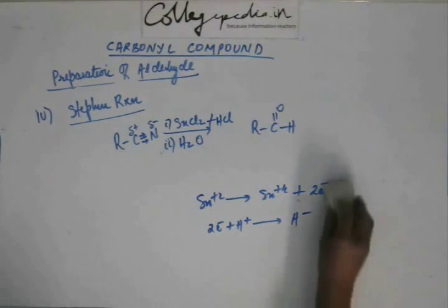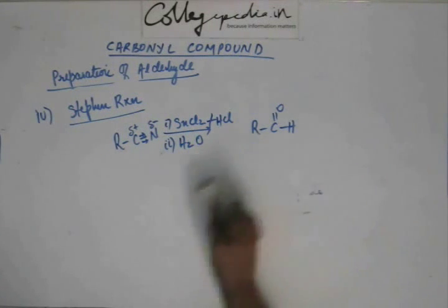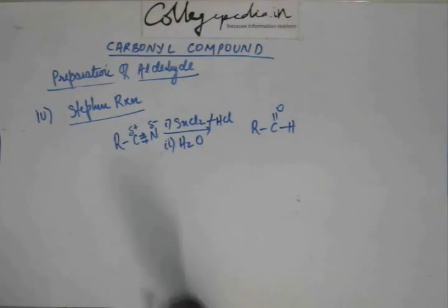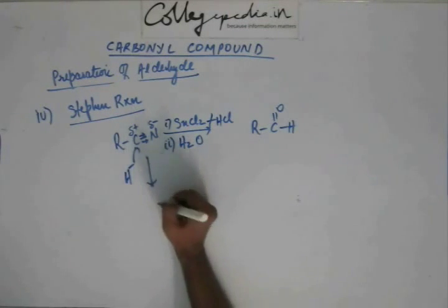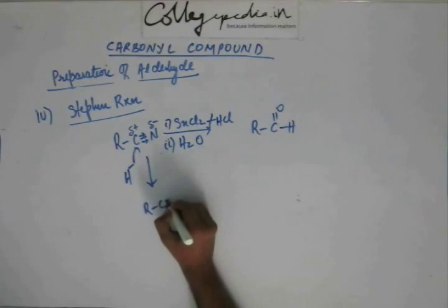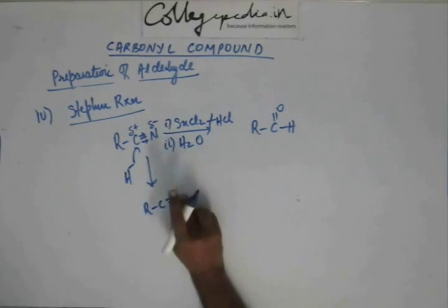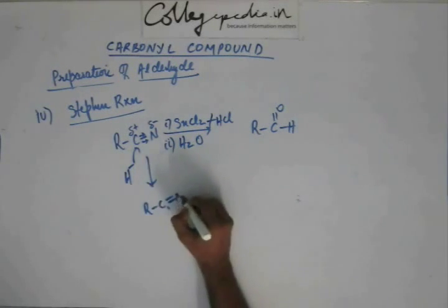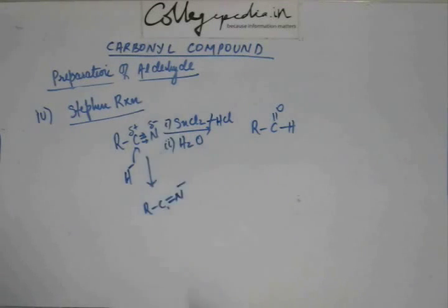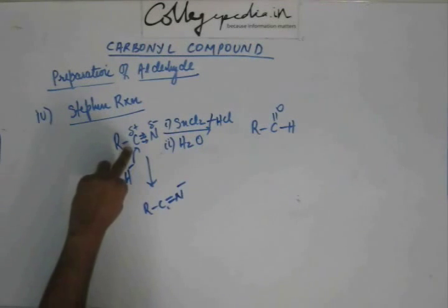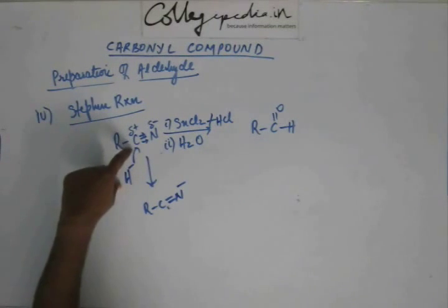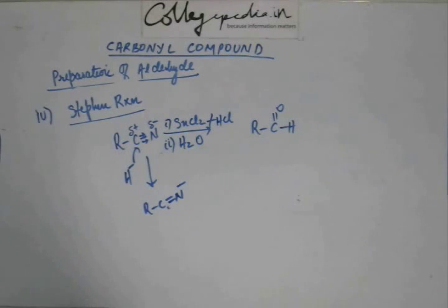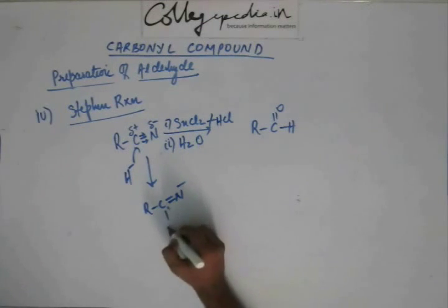When that attack happens, hydride comes and attacks on this carbon. When this happens, the electronic density of one of the bonds will be thrown into the orbital of this nitrogen, because when hydrogen is attacking this carbon, this carbon is going to form a bond with this hydrogen. Carbon cannot be pentavalent, so one of the bonds has to be broken and a new bond is going to be formed.